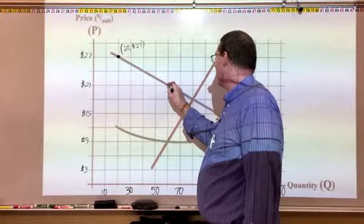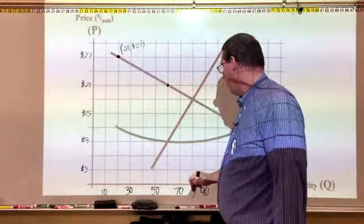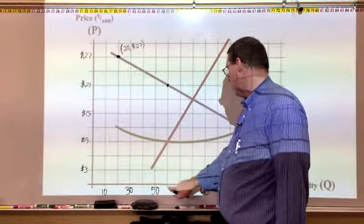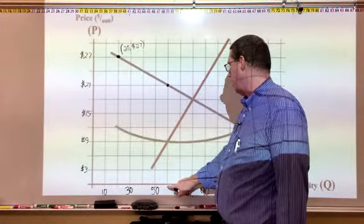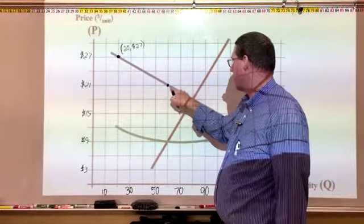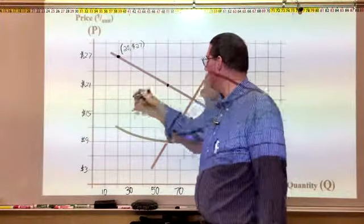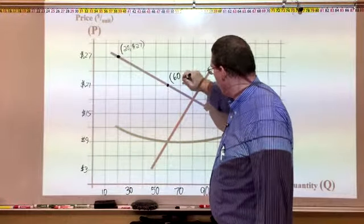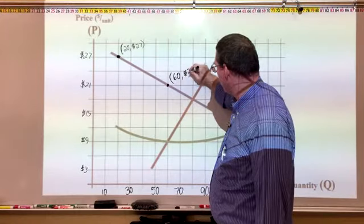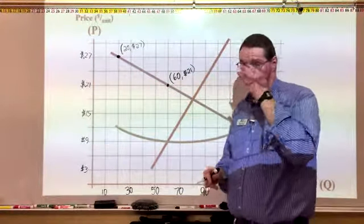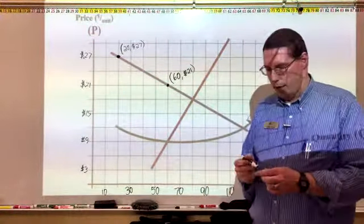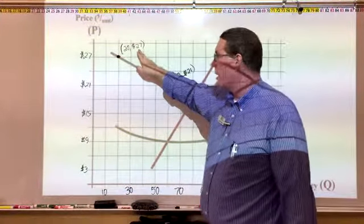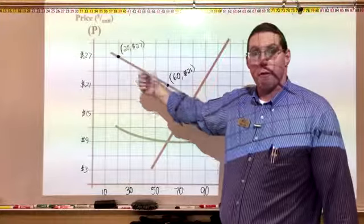How about this point right over here? We're going to go 10, 20, 30, 40, 50, and 60 — so quantity of 60. And 1, 2, 3, 4, 5, 6, 7 — times 3, so that's 21. This point represents a quantity of 60 units for a price of $21. Remember from the previous exercise that you can multiply price times quantity to get the total revenue for the business.